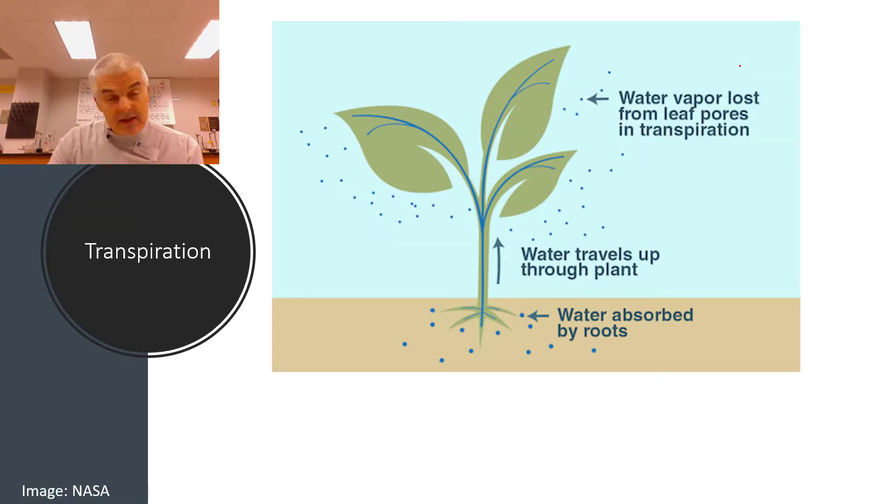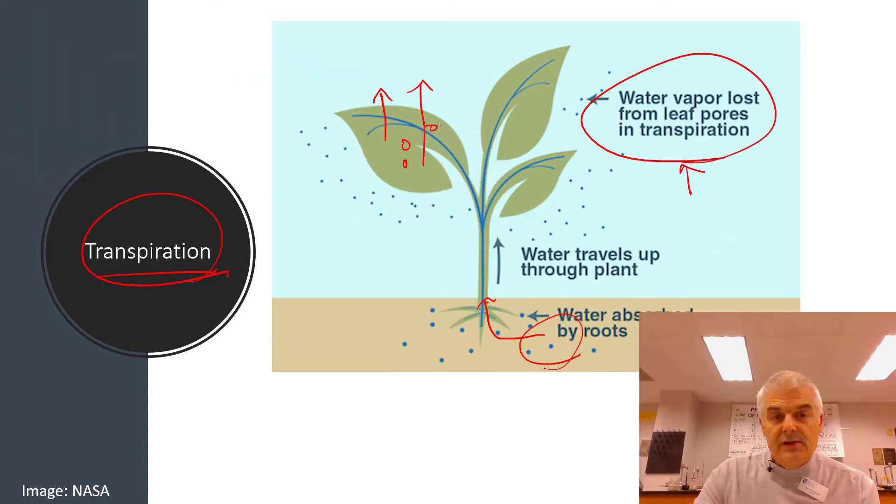And transpiration. What's transpiration? Transpiration is the water vapor lost from leaf pores. As water evaporates from trees, it's kind of weird to think about this. It's not just water that pools up on top of the leaf. It's actually the water that's evaporating through the leaves. So the water is absorbed by the roots. That's where some of the underground water goes. It goes back into the plants, travels through the plant, and then it actually evaporates.